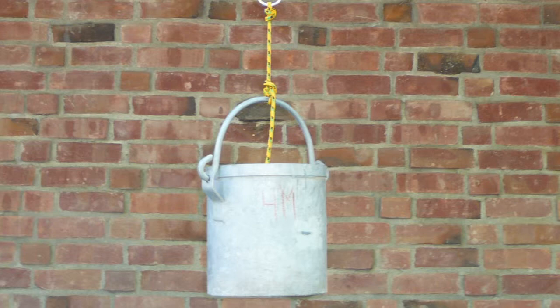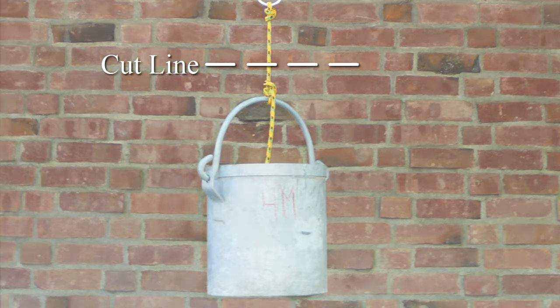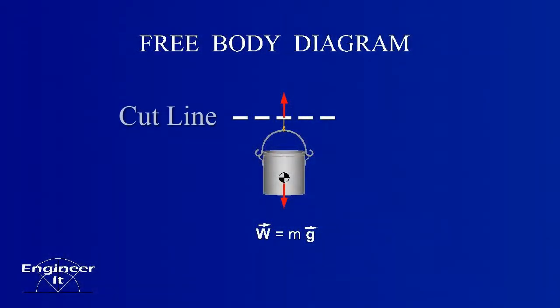Let's isolate the bucket and create a free body diagram. The bucket is isolated by cutting a line through the rope and adding a vector to show how the rope holds the bucket in equilibrium.